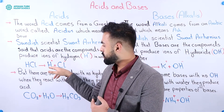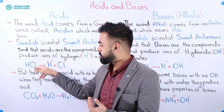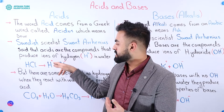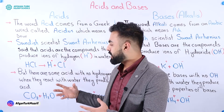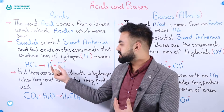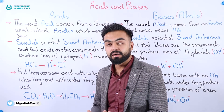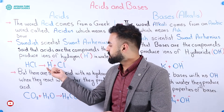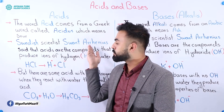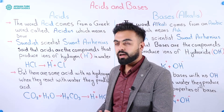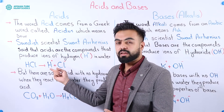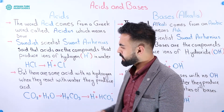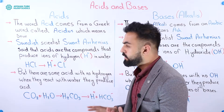Here we have an example: HCl. HCl is a compound, and if we dissolve this in water — this is not a reaction, we dissolve this in water — it will divide into two parts: positive ions and negative ions. The positive ions are the ions of hydrogen, and the negative ions are ions of chlorine. So according to the definition of Svante Arrhenius, this is an acid because it can produce ions of hydrogen in water.